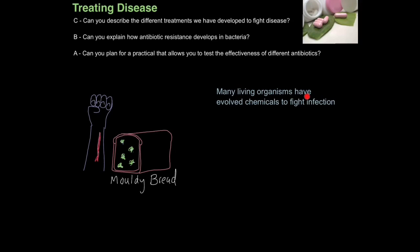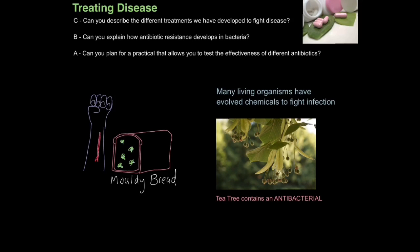So many living organisms have evolved chemicals to fight infection. A common example is tea tree, which is commonly used in hand washes and antiseptic washes because it naturally contains an antibacterial agent. You know when people are talking about saving the rainforests — there's a good reason for that. Biodiversity is incredibly important because many living organisms contain powerful antibiotic agents, antibacterial chemicals, antifungals, and so on, which can help us fight disease.